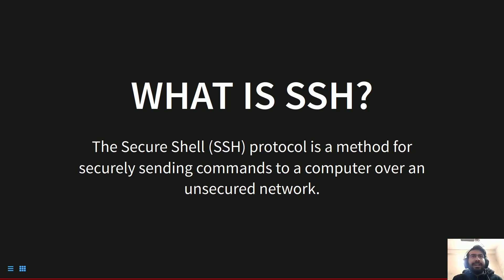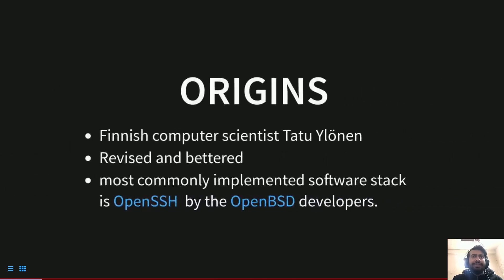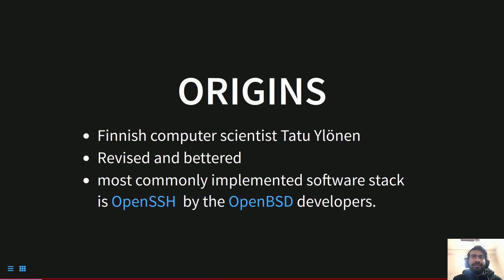SSH was originally started in Finland by a Finnish computer scientist named Tatu, and it was later revised and improved by his team with multiple versions. The most common implementation of SSH, used almost everywhere in Linux, Unix, and other systems, is OpenSSH, which is produced by the OpenBSD kernel developers.